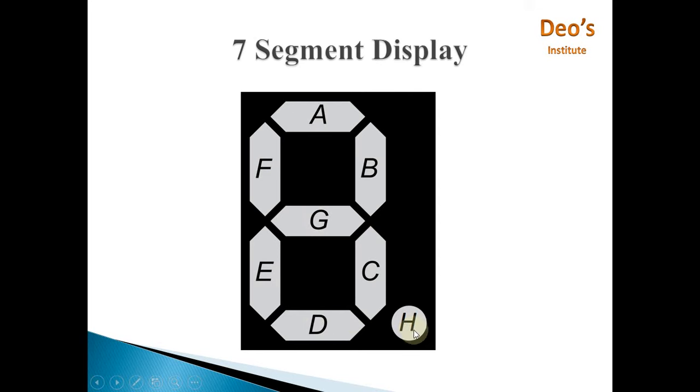This numbering is constant and is universally used, and H is used for the decimal point DP. In all, it consists of 7 LEDs numbered from A to F and H.